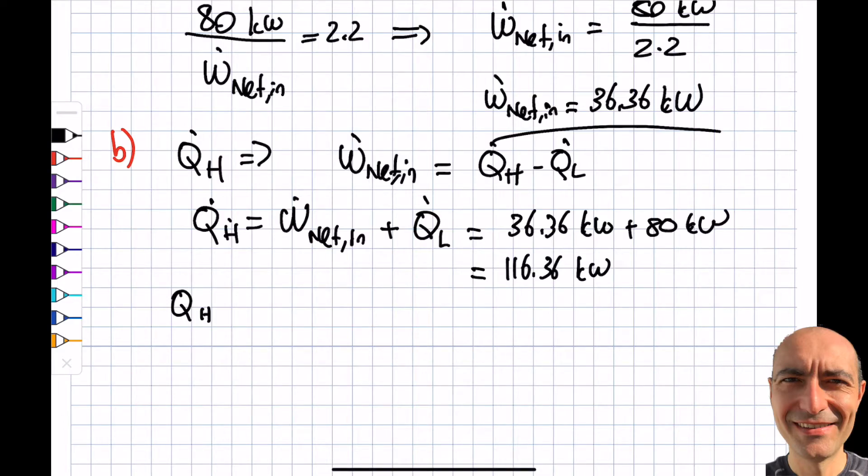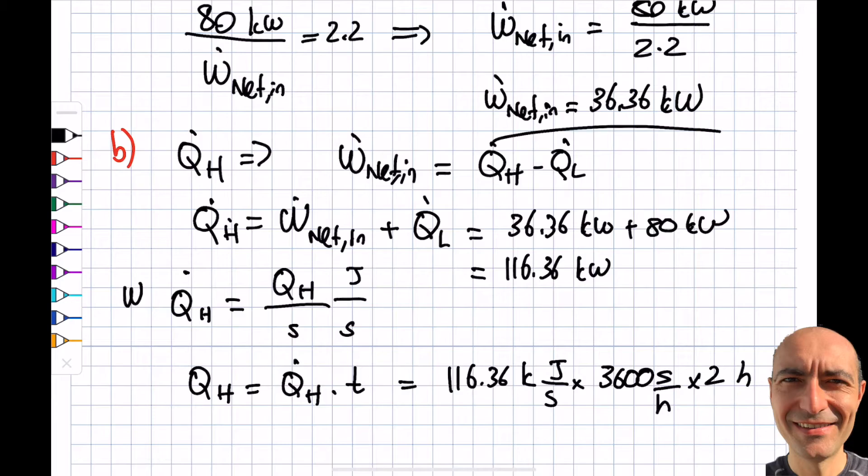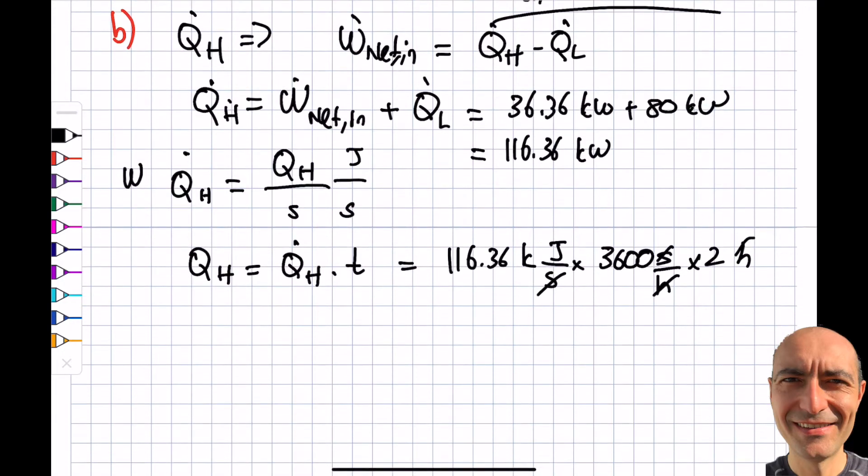Q_dot_H is Q_H per unit time. Remember, watts is joules per second. I'll multiply these to get Q_H. Q_H equals Q_dot_H times time. Q_dot_H is 116.36 kilowatts. Over two hours, one hour is 3600 seconds, and I have two hours. The units work out, and I get 837,792 kilojoules.